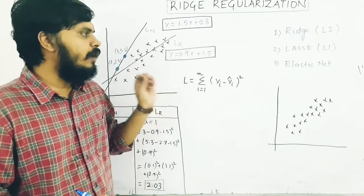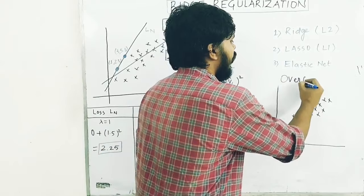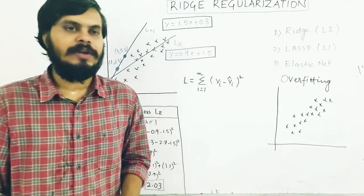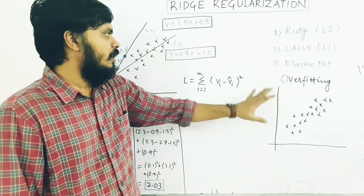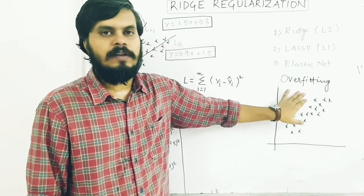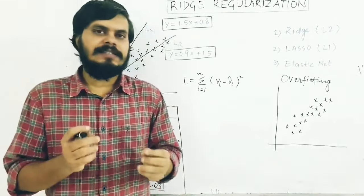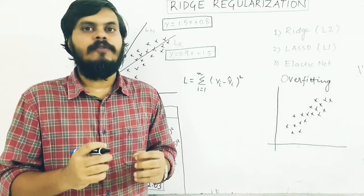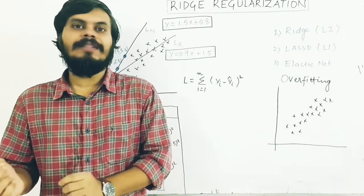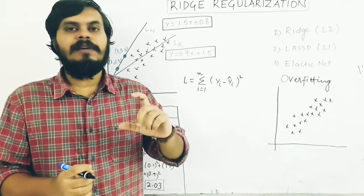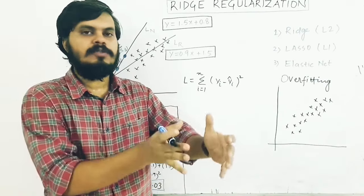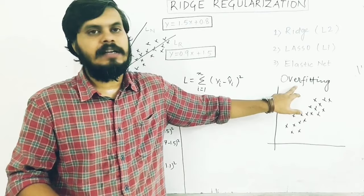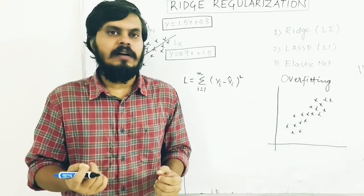Before starting the regularization part, I would like to discuss this term overfitting. Overfitting is this phenomena where a machine learning model is performing exceptionally well on training data but not so well on the testing data. This means your model has too much variance - its performance on one dataset versus another is completely different.